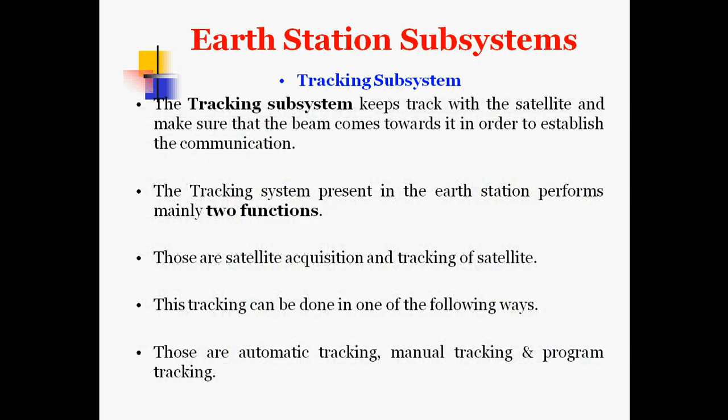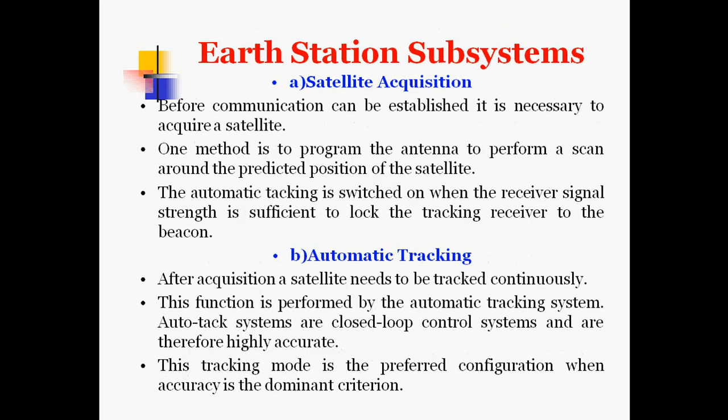The tracking subsystem is the fourth major subsystem. It keeps track of the satellite and ensures the beam is pointed towards it in order to establish communication. The tracking system performs mainly two functions: satellite acquisition and tracking of the satellite. Tracking can be done by automatic tracking, manual tracking, or program tracking. For satellite acquisition, before communication can be established it is necessary to acquire the satellite — one method is to program the antenna to perform a scan around the predicted position of the satellite.